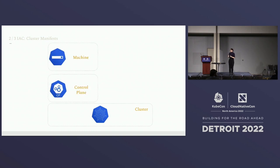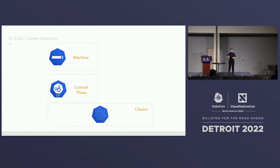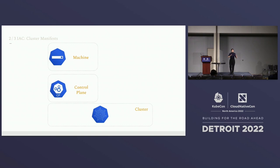By default, with every cluster you have a control plane resource associated with it. The control plane resource programmatically manages a set of machines that have the control plane label or control plane components installed. A machine here is very similar to an instance — you can specify the version of Kubernetes, instance type, and the networking and security controls you'd like to attach to your control plane.